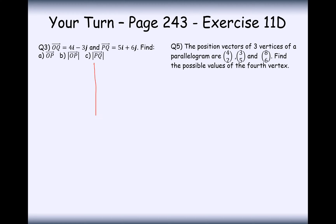Let's have a go at question 3 then. So let's draw ourselves a diagram. OQ is 4i minus 3j, so that's gone 3 down and 4 across. And this is Q. And then how we get from P to Q is we go 5i plus 6j.